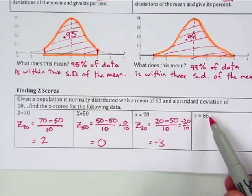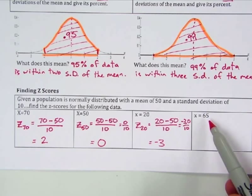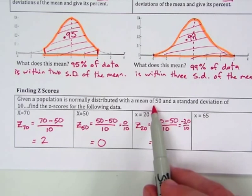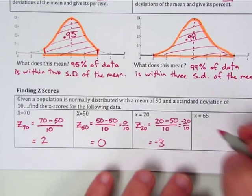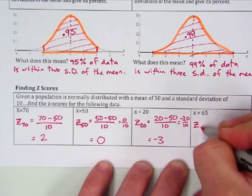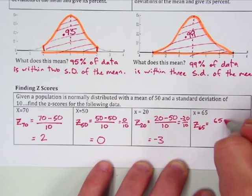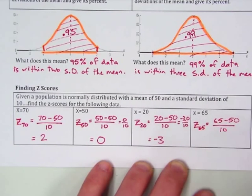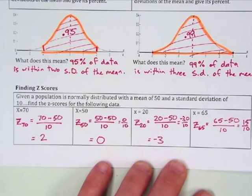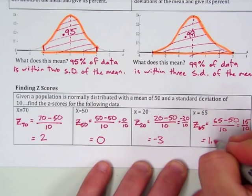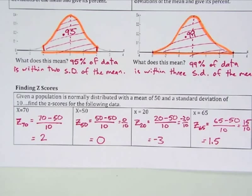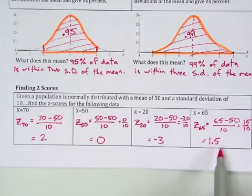Looking at x = 65: since 65 is bigger than 50, we expect a positive z-score. z(65) = (65 − 50) / 10 = 15 / 10 = 1.5. We expected positive, and we got it. This also shows that z-scores don't have to be whole numbers — they can be decimals as well.